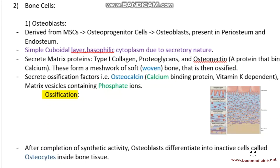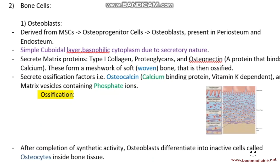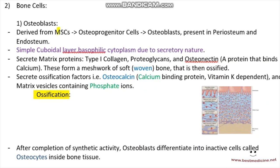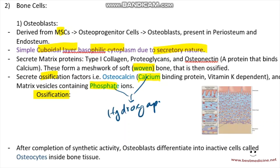Looking at the neat notes summary: bone cell number one, the osteoblast, is derived from mesenchymal stem cells, has a simple cuboidal layer of basophilic cytoplasm due to its secretory nature. It secretes woven bone first, then releases ossification factors — calcium and phosphate ions — that combine to form hydroxyapatite crystals, the mineralized matrix arranged in lamellae forming lamellar bone.